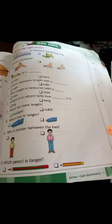Seventh: which has more length, handspan or cubit? Cubit has more length. The answer is two. Eighth: which shoe is longer? First shoe is longer. Ninth: who is shorter between the two? The first picture, first answer. Tenth: which pencil is longer? First picture.